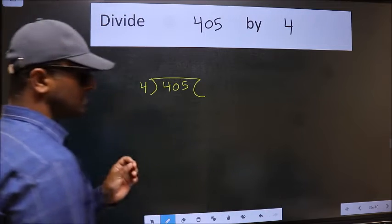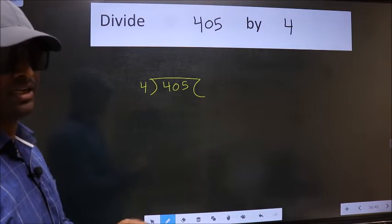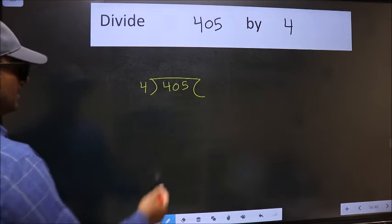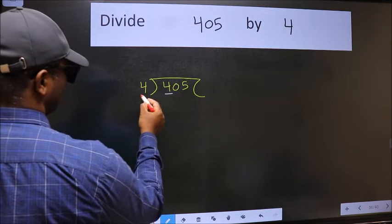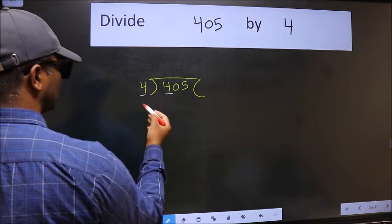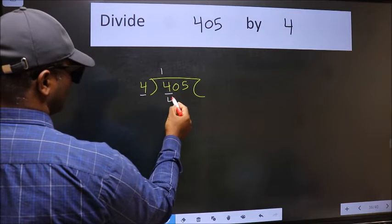This is your step 1. Next, here we have 4, here also 4. When do we get 4 in the 4 table? 4 ones is 4.